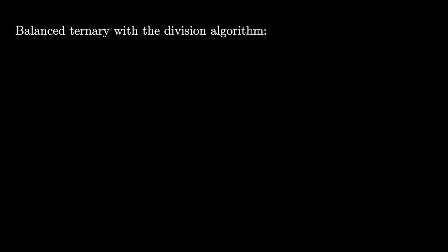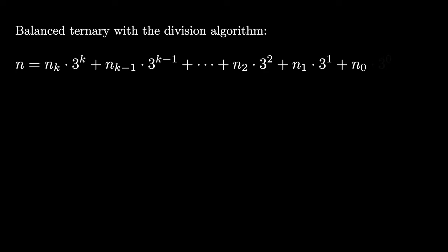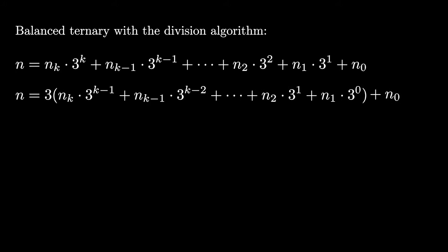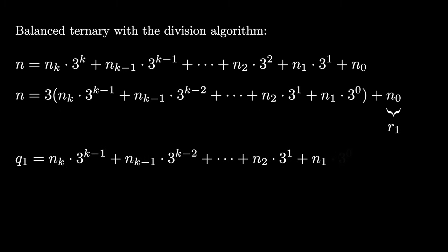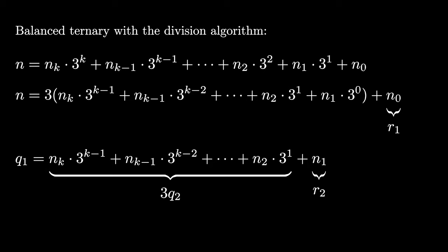Here's the general idea for repeatedly using the modified division theorem to find the digits of the balanced ternary representation. Given n in balanced ternary, when we factor out a 3 we're left with the quotient and the remainder, which is n sub 0, the least significant digit. We repeat the process on the quotient q1, extracting the next digit, and continue until the quotient reaches 0. The list of remainders from least significant to most significant gives the full balanced ternary representation.